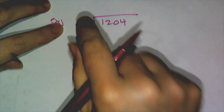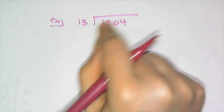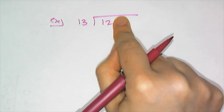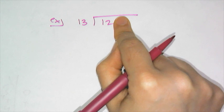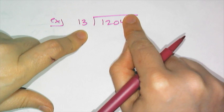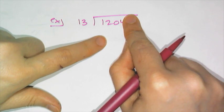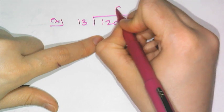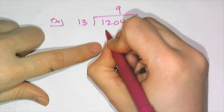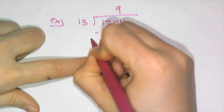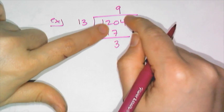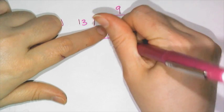If I want to do this division, I look at the divisor and think: how many times does it go into the first digits? Here 12 is smaller than 13, so any time the number is smaller you have to add a digit. I think: how many times does 13 go into 120? That's 9. I take 9 and multiply it by 13 and get 117. Then I subtract and I'm left with 3.